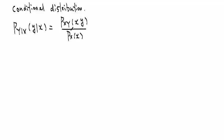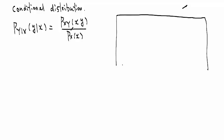Alright, let's try to draw a picture of this conditional distribution. See if I can do that well. We already defined the conditional distribution of Y given X. We go to a small value of X — it's given by this ratio. Let's draw a picture. This is my sample space. Let's call that omega.